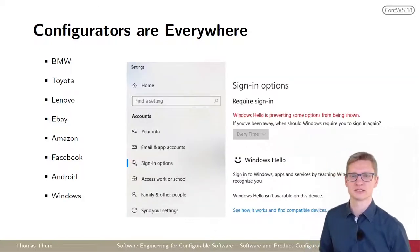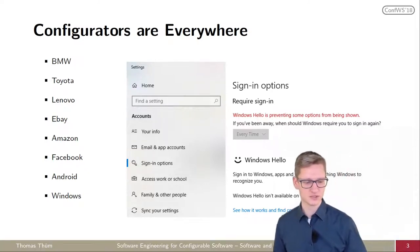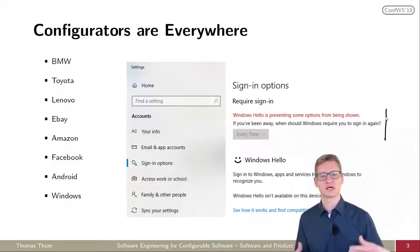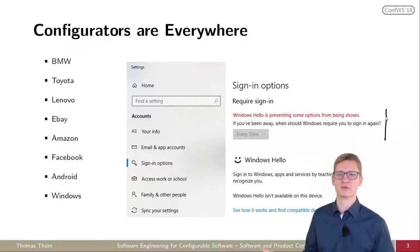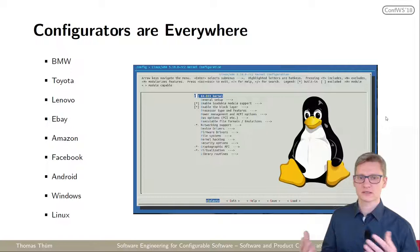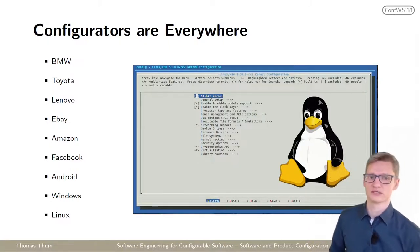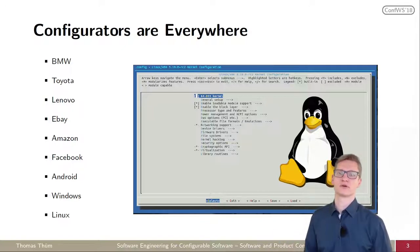In Windows you have some settings and here already becomes visible a potential problem. Sometimes not all the options are available and the worst software system can tell you is they are not available, but not why. Probably the most prominent example of configurable software is the Linux kernel with about 20,000 configuration options.